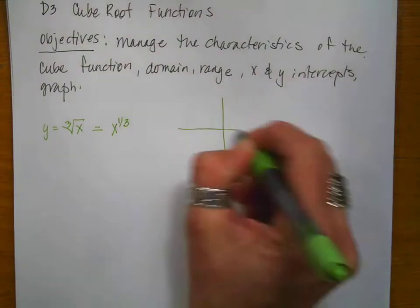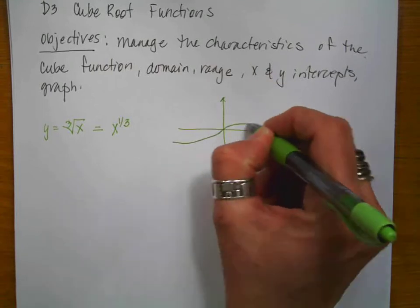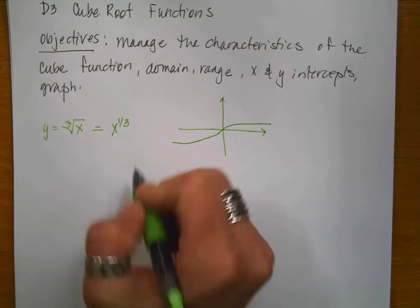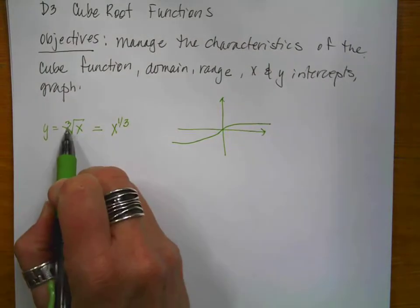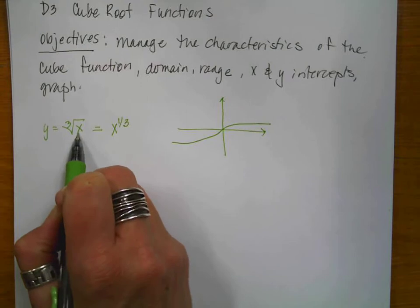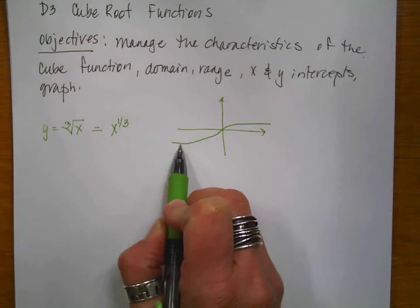If I sketch the graph of what we just saw on our calculator, it kind of looks like this. So since this is an odd root, we can take the cube root of a negative, which is why this part of the graph is here. So the graph has nowhere that it's undefined.